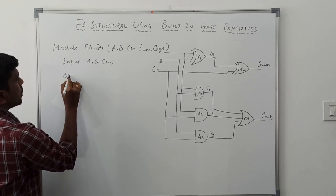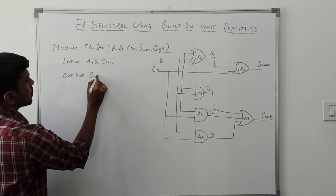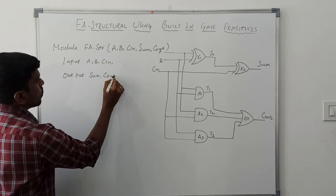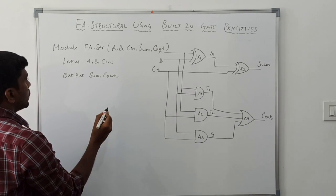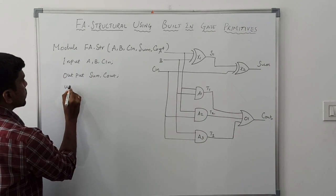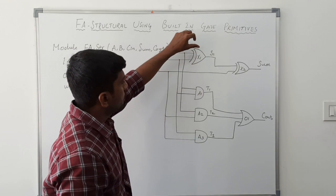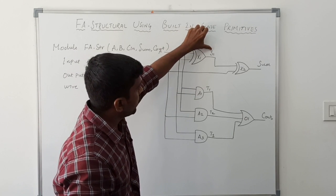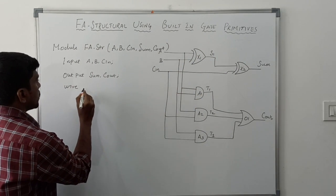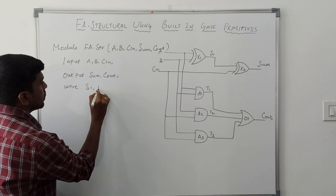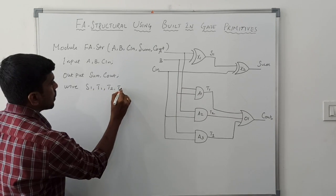Then for output: output sum, c-out — where c-out represents the carry-out signal. Now declare the wire signals inside the module. In this structure we use four wire signals: s1, t1, t2, and t3.